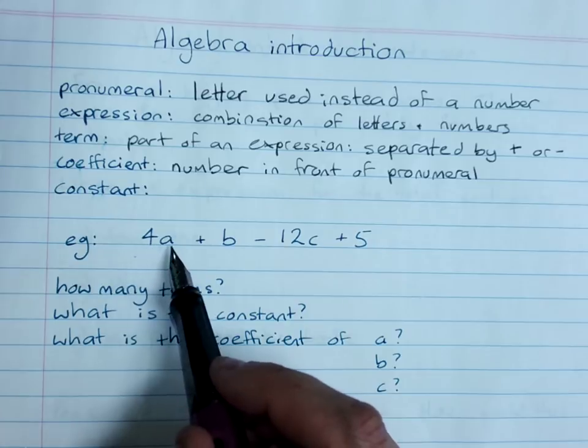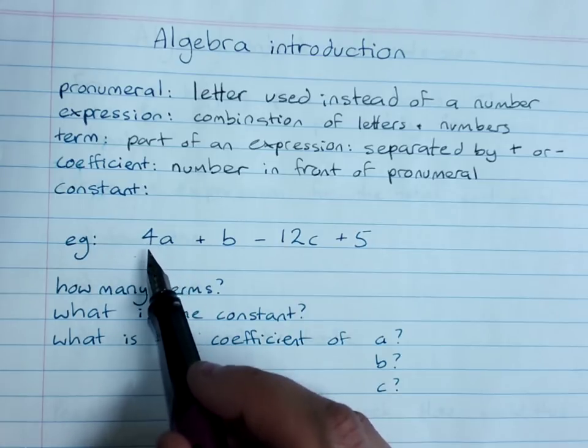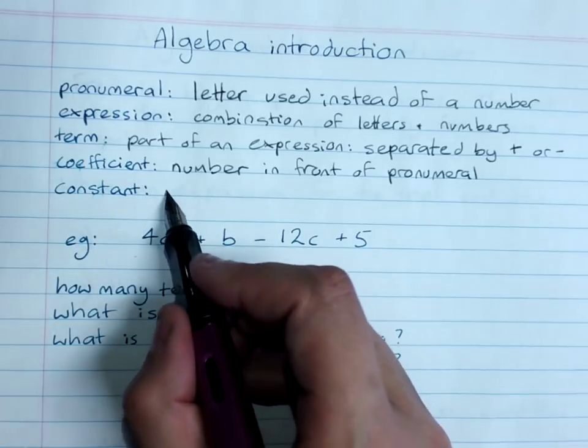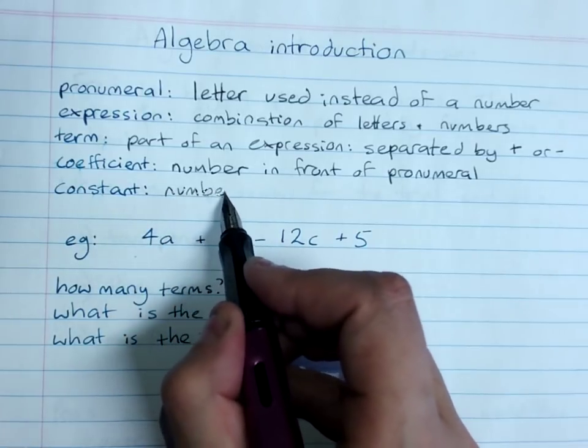The coefficient of a is 4, and this means 4 times a. And a constant is a number on its own. No letter.